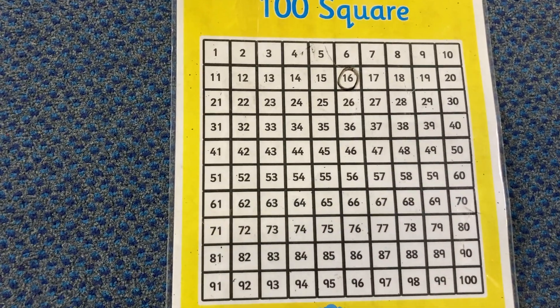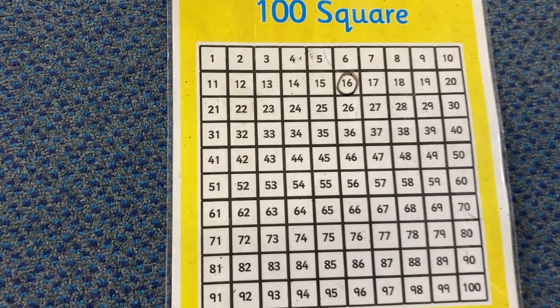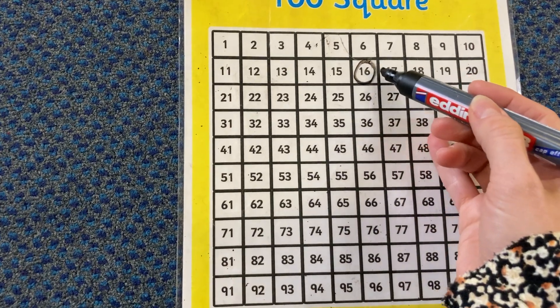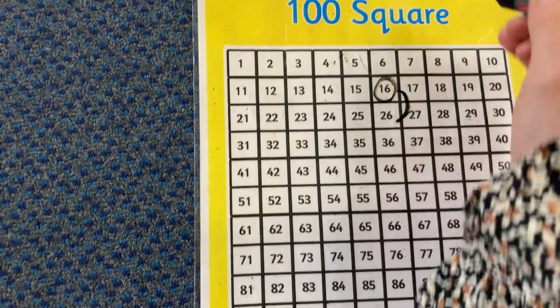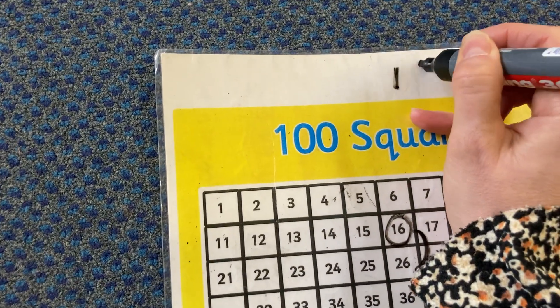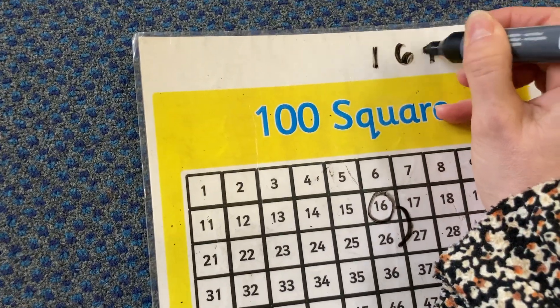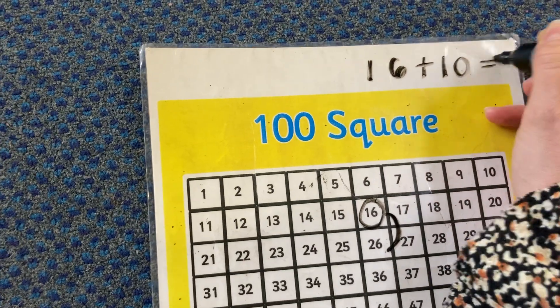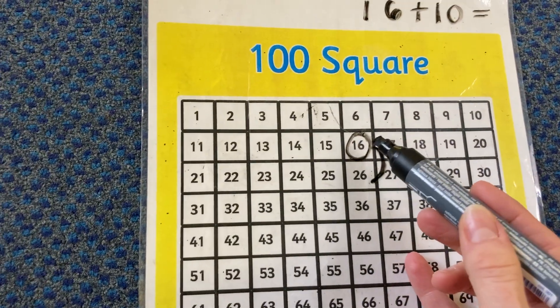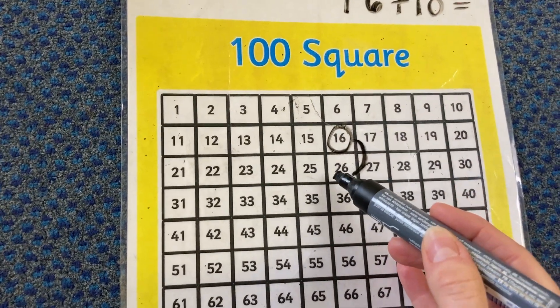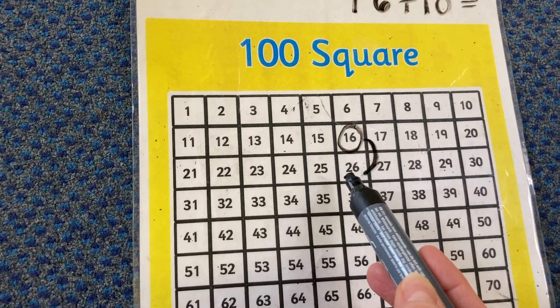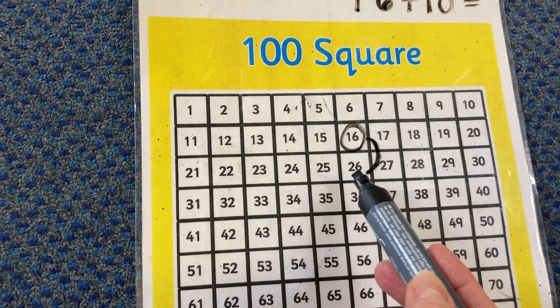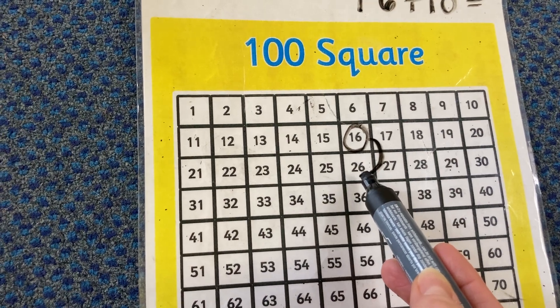So when I add 10 to a number, we move down our number square. So if I'm just adding 10, if my number sentence was 16 add 10, I'm just adding 10. Now see what happens to the numbers. When we add 10, the tens number changes, but the ones stays the same.